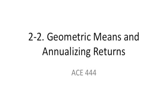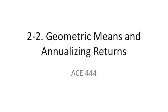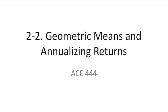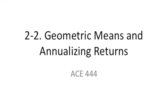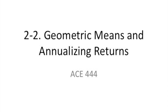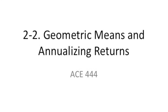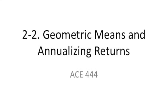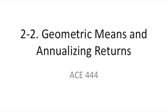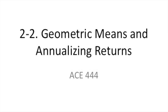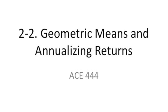We are going to be doing three things in this module. First, we're going to talk about what the geometric mean is and define it. Second, we're going to indicate how to calculate the geometric mean using data from the adjusted close, which differs from the GeoMean function in Excel. And finally, we're going to talk about annualizing returns. All of these items will be implemented in homework 2.